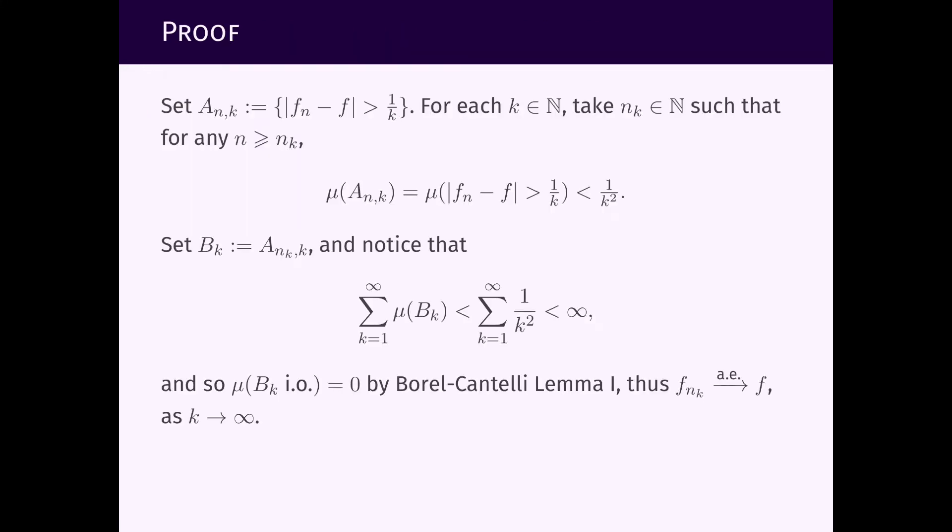To prove this proposition we're going to consider this set here A indexed by both n and k, where n and k are just any two natural numbers. And it will be the following: it will be the set at which the function f_n minus the function f, the difference, the absolute value of this difference is larger than 1 over k.